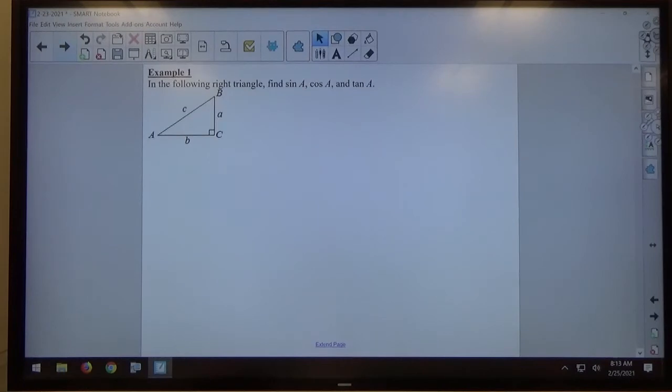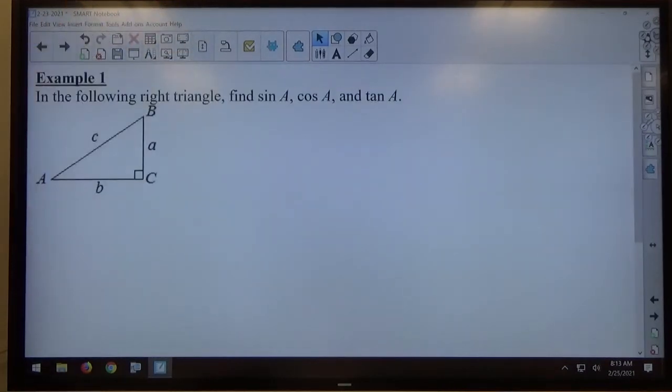So if you take a look at example one, in the following right triangle, find sine of A, cosine of A, and tangent of A. And they just got these generic sides a, b, and c.